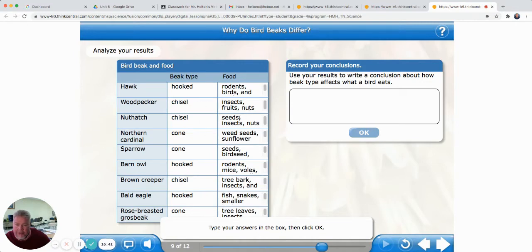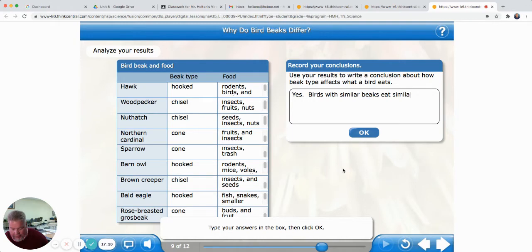And then now let's look at the chisel. Chisel eats insects, fruits, nuts, insects, seed, nuts, tree bark, insects, and seeds. Cone: weed seeds, sunflower seeds, grains, fruit, insects. Seeds, bird seed, insects, trash, tree leaves, insects. So it looks like they all eat about the same thing, don't they? So do you think that birds with similar beaks eat similar foods? Yes. Birds with similar beaks eat similar foods.